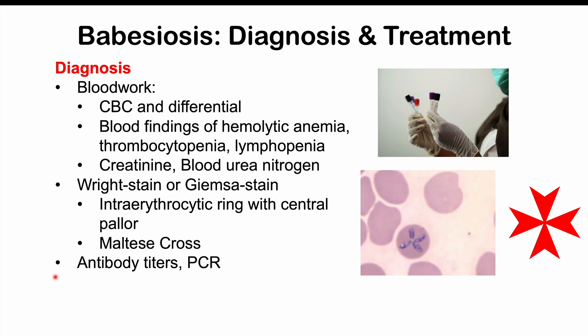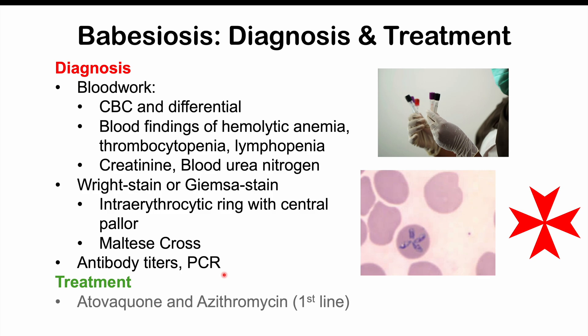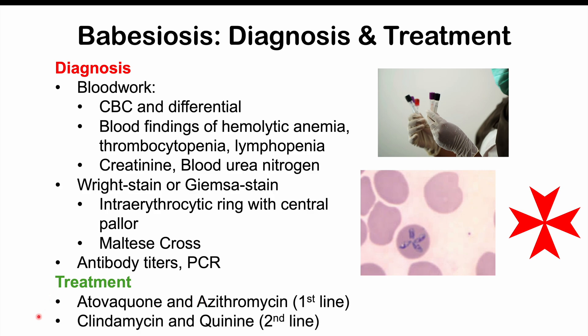Once the diagnosis is made, the first-line treatment for babesiosis is atovaquone and azithromycin as combination therapy. The second-line or alternative treatment is clindamycin and quinine. Please check the lesson on Lyme disease, and if you haven't already, please like and subscribe for more lessons like this one. Thanks so much for watching and hope to see you next time.